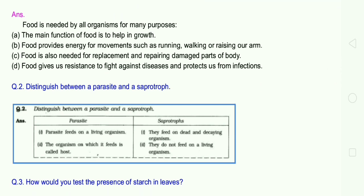Question 2: Distinguish between a parasite and a saprotroph. Parasite feeds on a living organism. Saprotrophs feed on dead and decaying organisms. Parasites live on a host organism. Saprotrophs do not feed on living organisms.